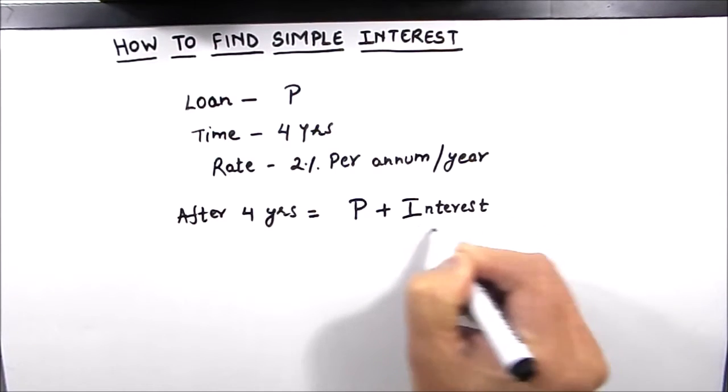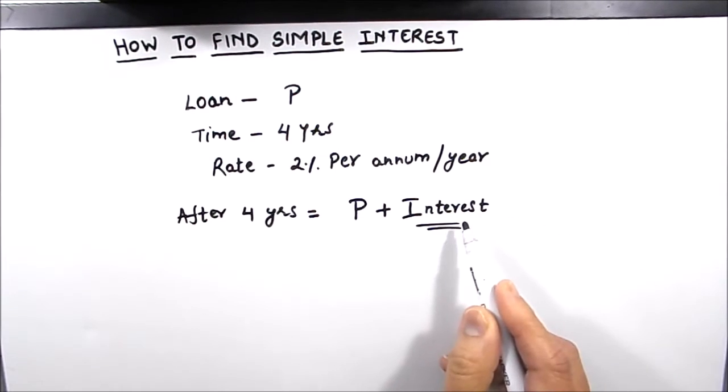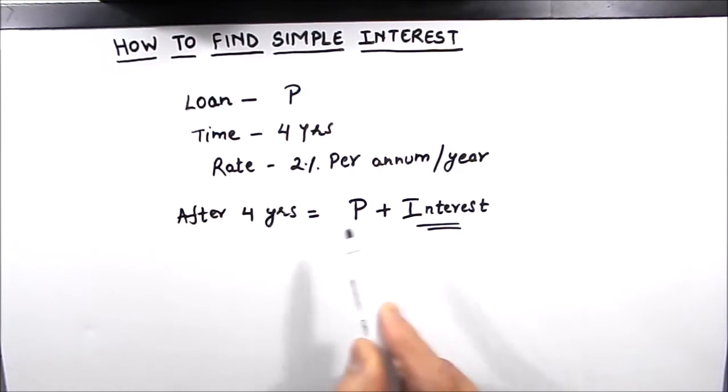This is called simple interest. This is the amount which you have to pay apart from the principal amount after the allotted time. You can say that it is an extra amount which the bank or the lender will take for giving money for four years. It is an extra amount which you have to pay apart from the principal amount for borrowing a loan from the bank. So let us now solve a few examples and find out simple interest.